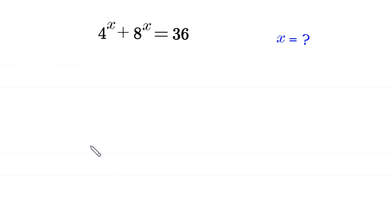Hello, welcome to how to solve this very nice exponential equation. 4 to the power x plus 8 to the power x is equal to 36. We need to find all possible values of x.